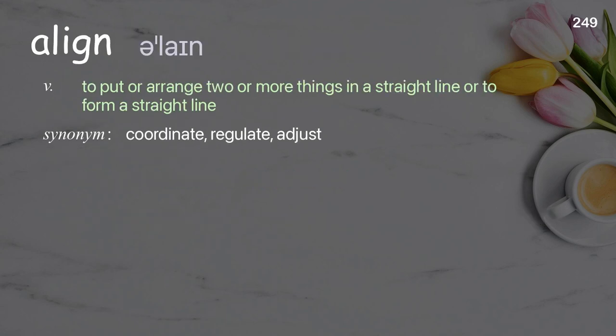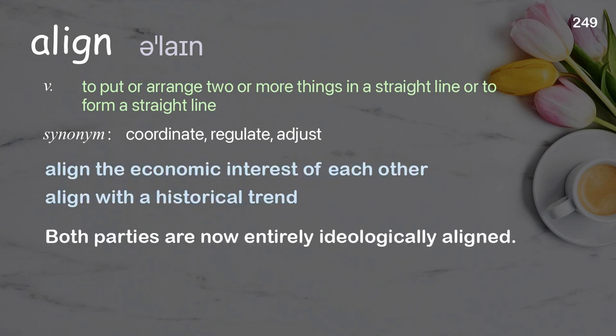Align: to put or arrange two or more things in a straight line or to form a straight line. Examples: align the economic interest of each other; align with a historical trend. Both parties are now entirely ideologically aligned.